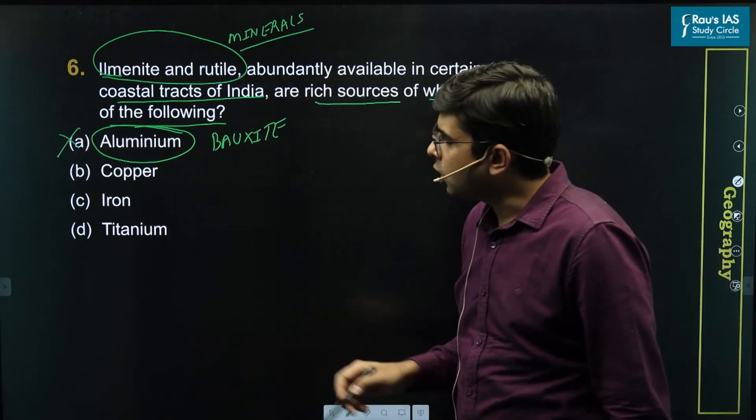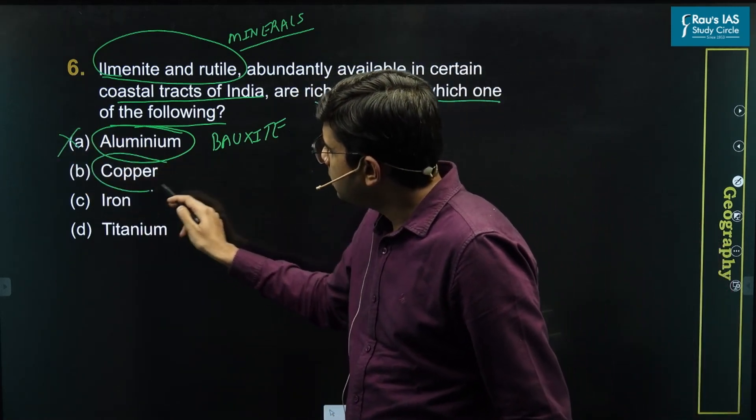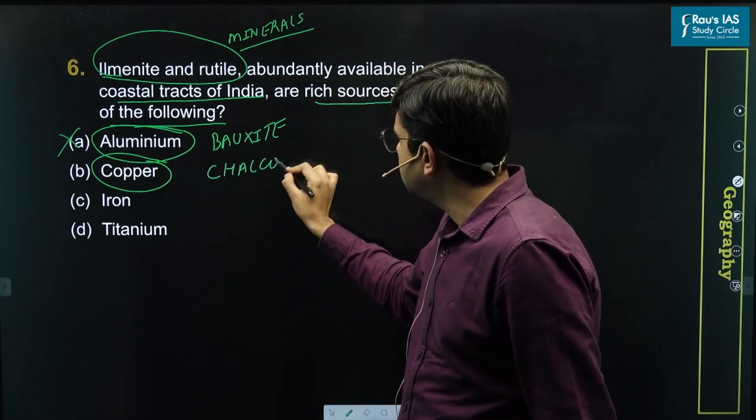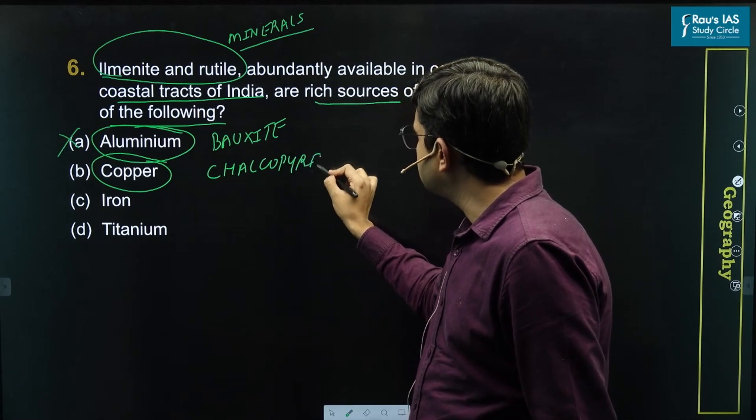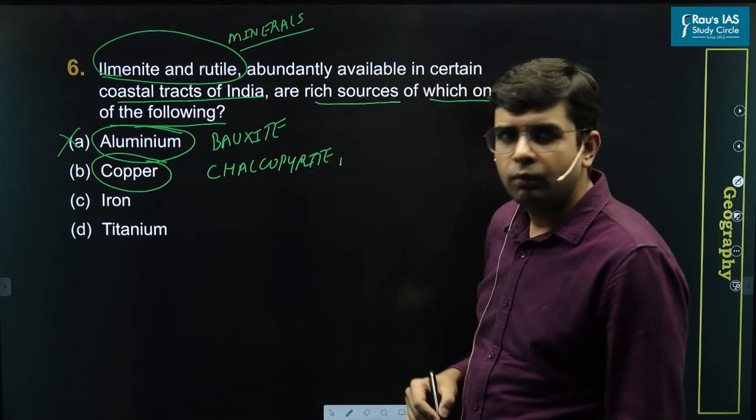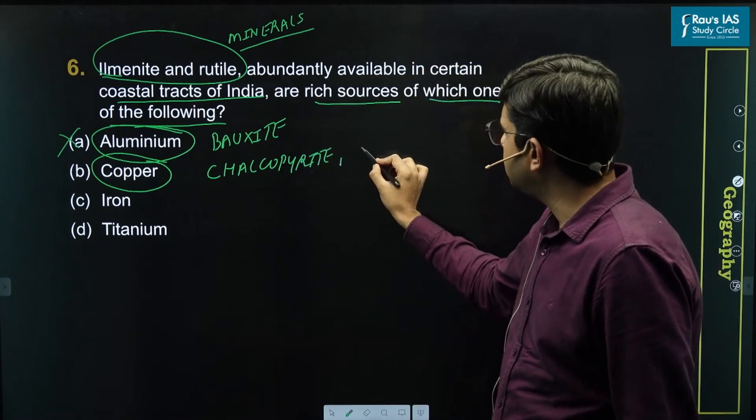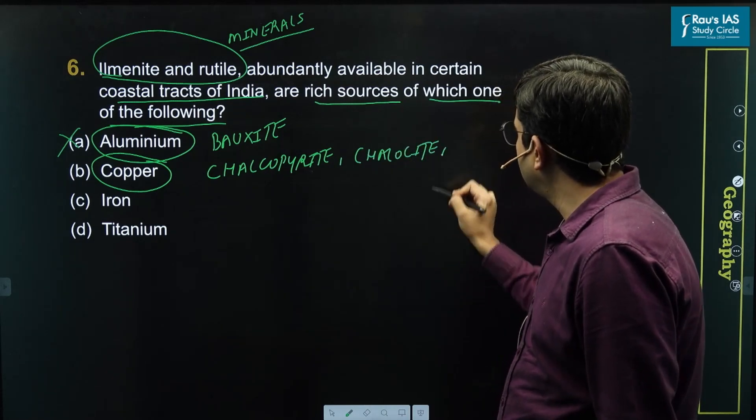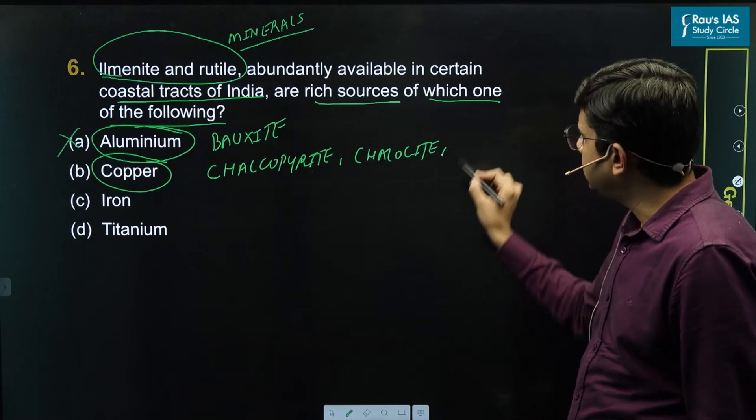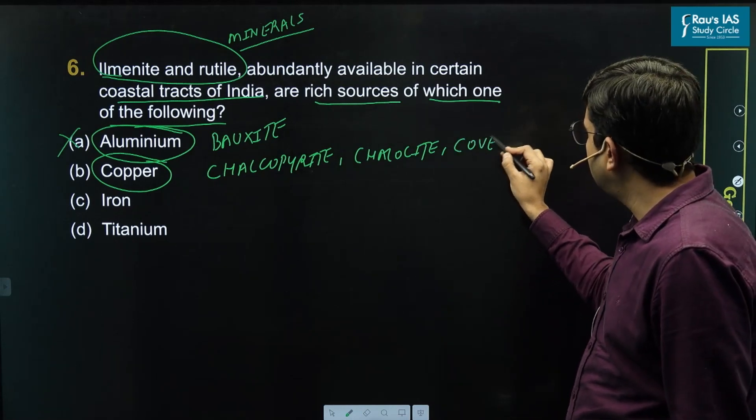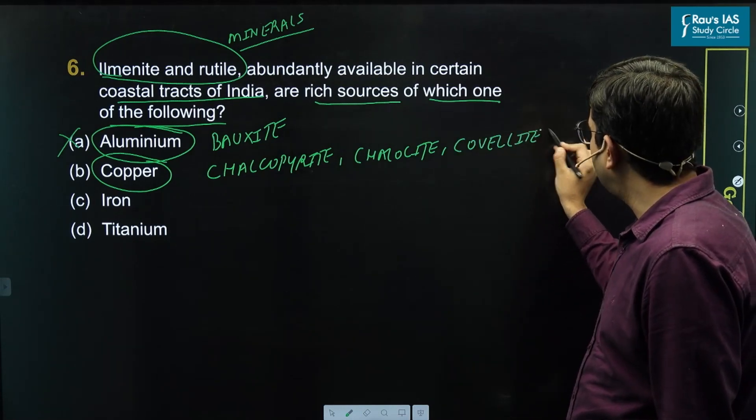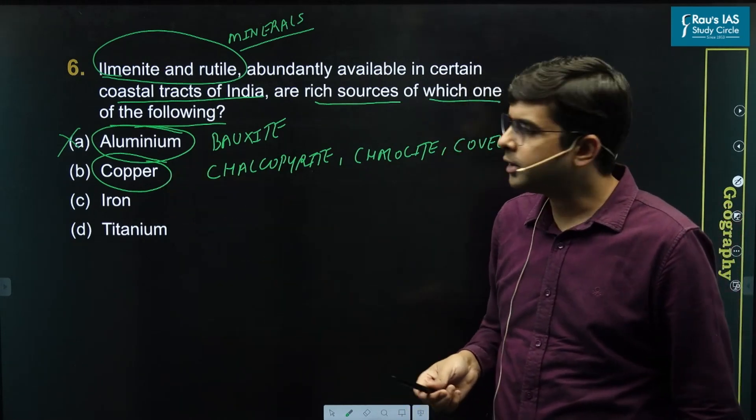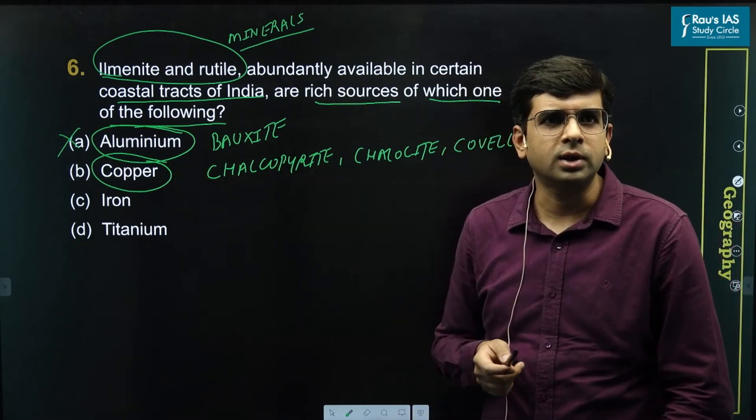What about copper? Copper's primary ore is chalcopyrite. Along with this you will be having another ore of copper, chalcosite, and one more is there, that is covelite. So definitely copper cannot be extracted from ilmenite and rutile because it is not present there.